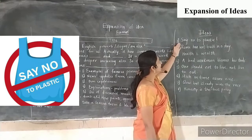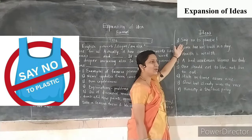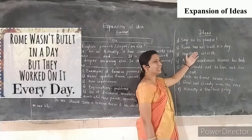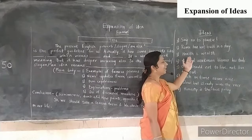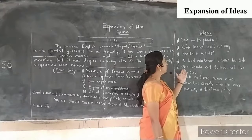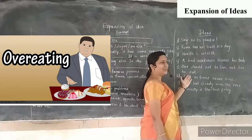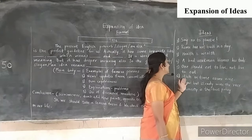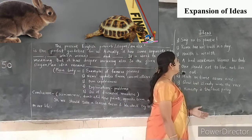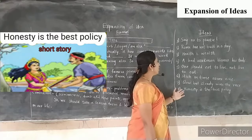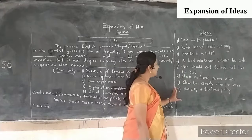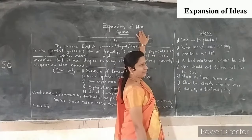Just see: the first one is 'Say no to plastic' — it is a slogan. Second: 'Rome was not built in a day.' Third: 'Health is wealth.' Fourth: 'A bad workman blames his tools.' Fifth: 'One should eat to live, not live to eat.' Sixth: 'A stitch in time saves nine.' Seventh: 'Slow but steady wins the race.' And eighth: 'Honesty is the best policy.' Such examples are given here to get the idea.